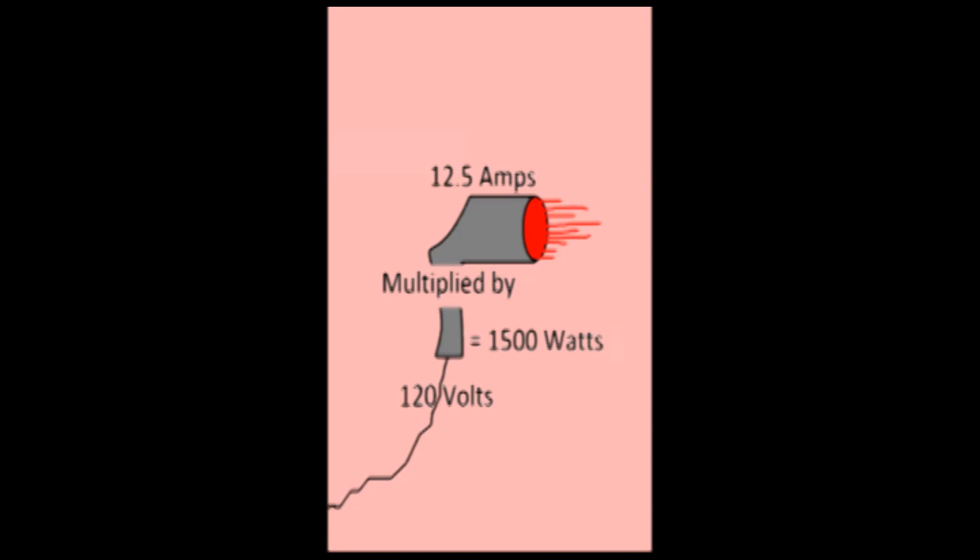For practical purposes, let's say you have a blow dryer that is rated at 120 volts and uses 12.5 amps. Well, 120 volts times 12.5 amps comes to 1,500 watts.